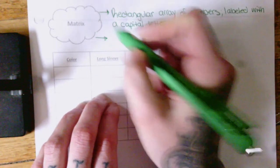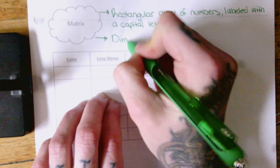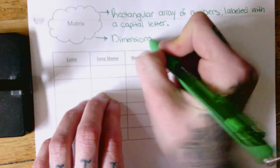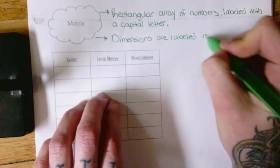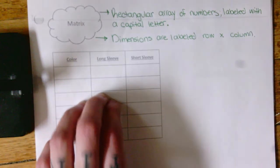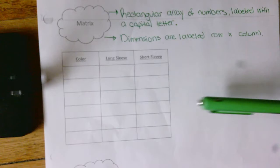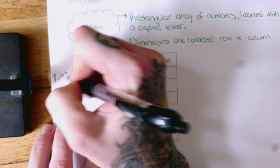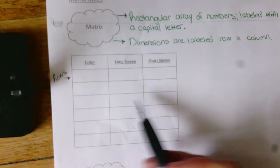Okay, so matrices, which would be the plural of matrix, have dimensions. And they are labeled row by column. So if you think about row row row your boat, you've got a little boat going side to side. Okay, so rows go side to side.